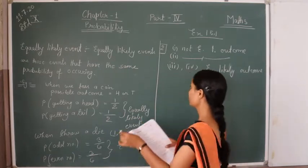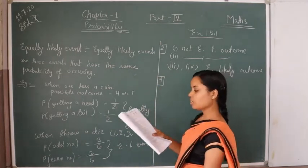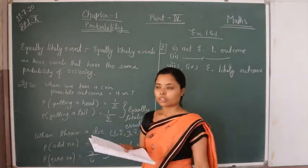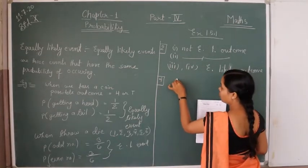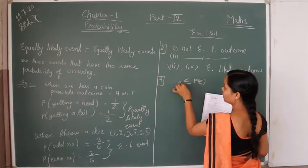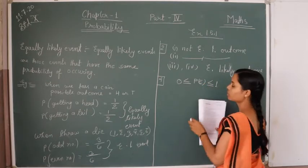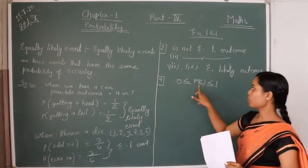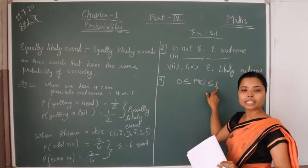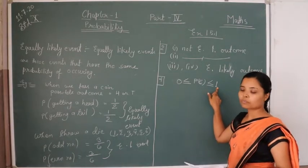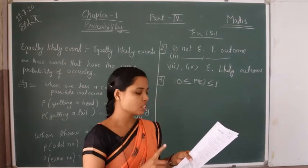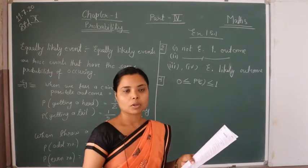Question 4: which of the following cannot be the probability of an event? As explained in the previous video, the probability of an event is greater than or equal to 0 and less than or equal to 1. This implies that the probability cannot be negative and cannot be greater than 1. So our answer is B, which is -1.5, because it is negative.